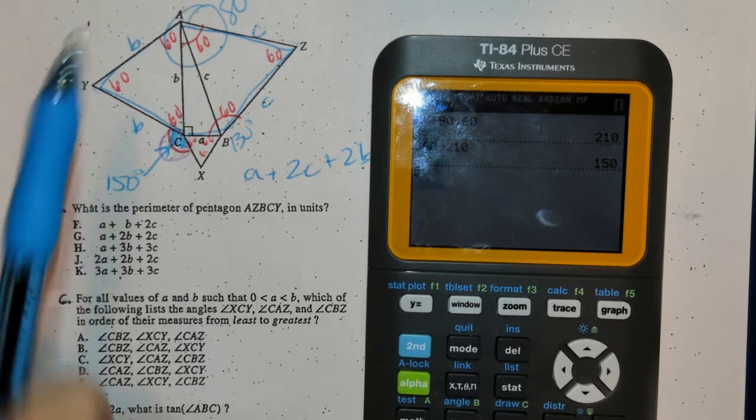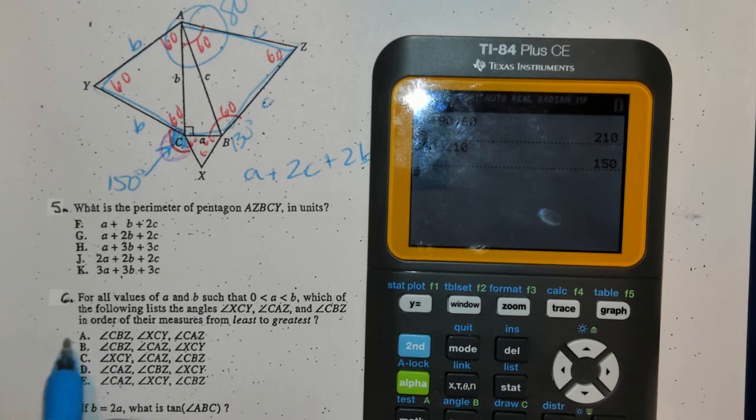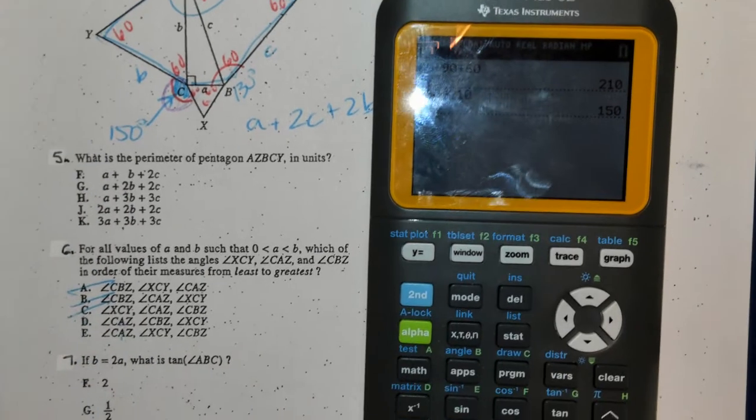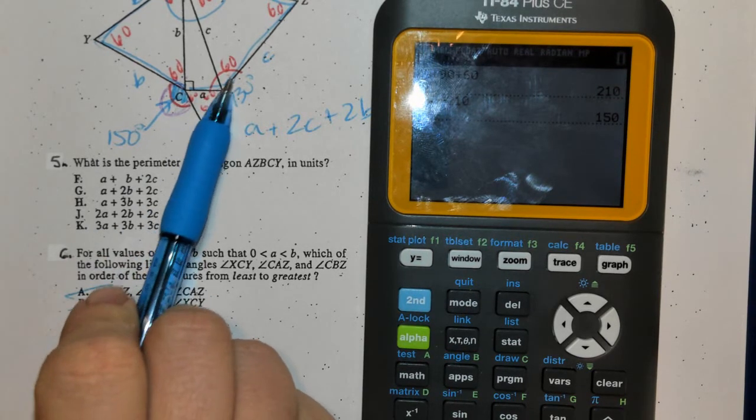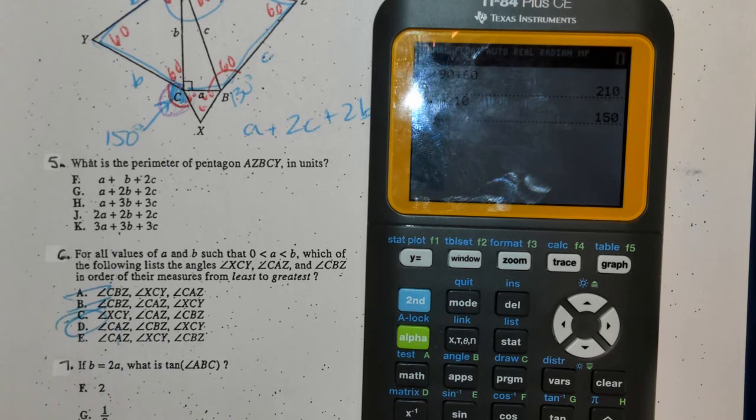A in the middle first, so it could be either at this point, either D or E. Then it's angle right over here, B in the middle second. I only have one option with B in the middle left, so option is D.